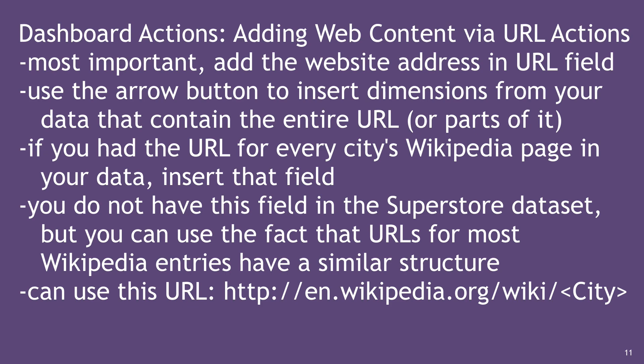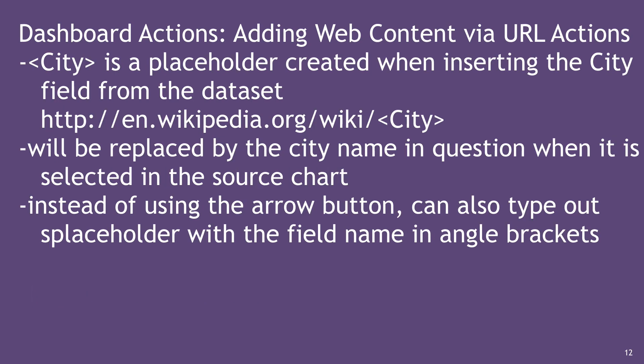Most importantly, add the website address in the URL field. Use the arrow button to insert dimensions from your data that contain the URL — the entire URL or parts of it. For example, you can use the structure of Wikipedia URLs: http://en.wikipedia.org/wiki/[City], where [City] is a placeholder created by inserting the City field from the data set.